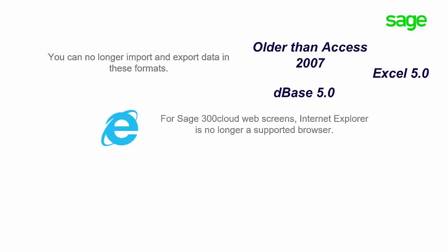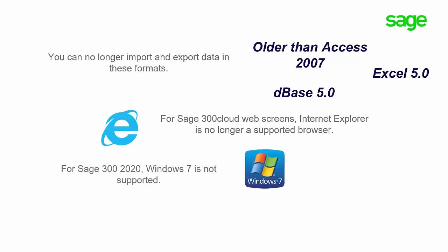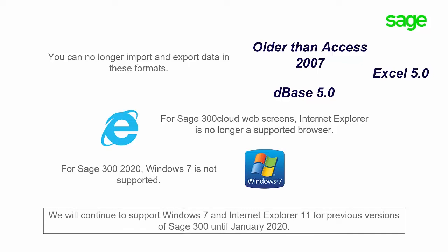For Sage 300 Cloud web screens, Internet Explorer is no longer a supported browser. For Sage 300 2020, Windows 7 is not supported. We will continue to support Windows 7 and Internet Explorer 11 for previous versions of Sage 300 until January 2020.